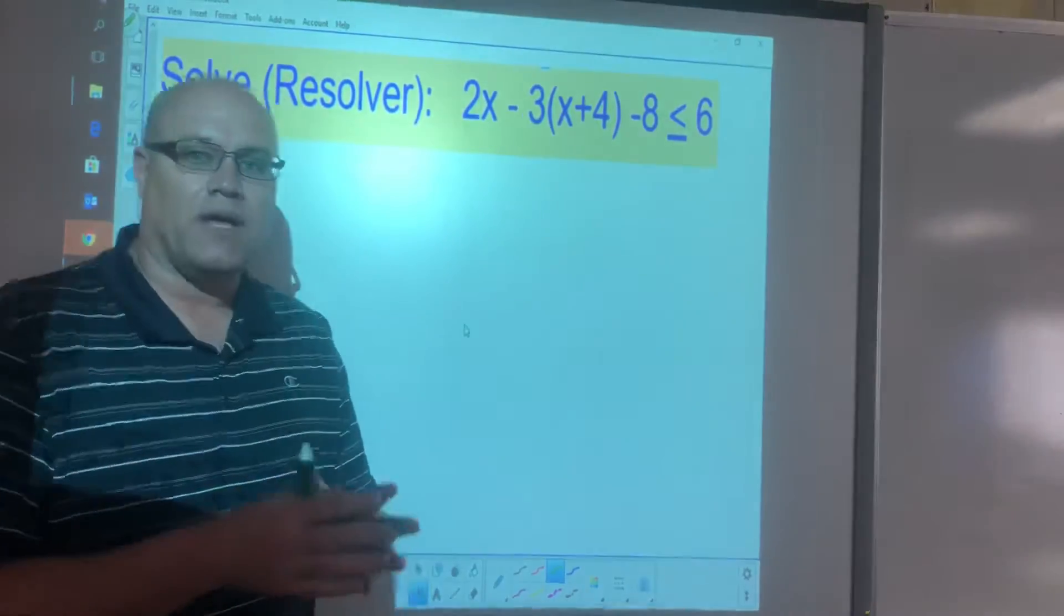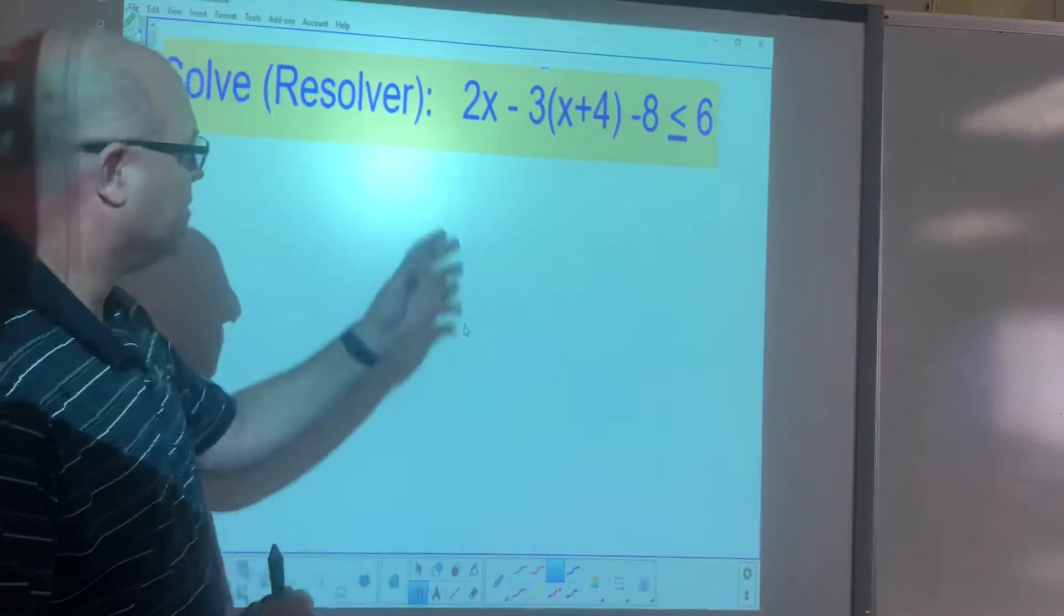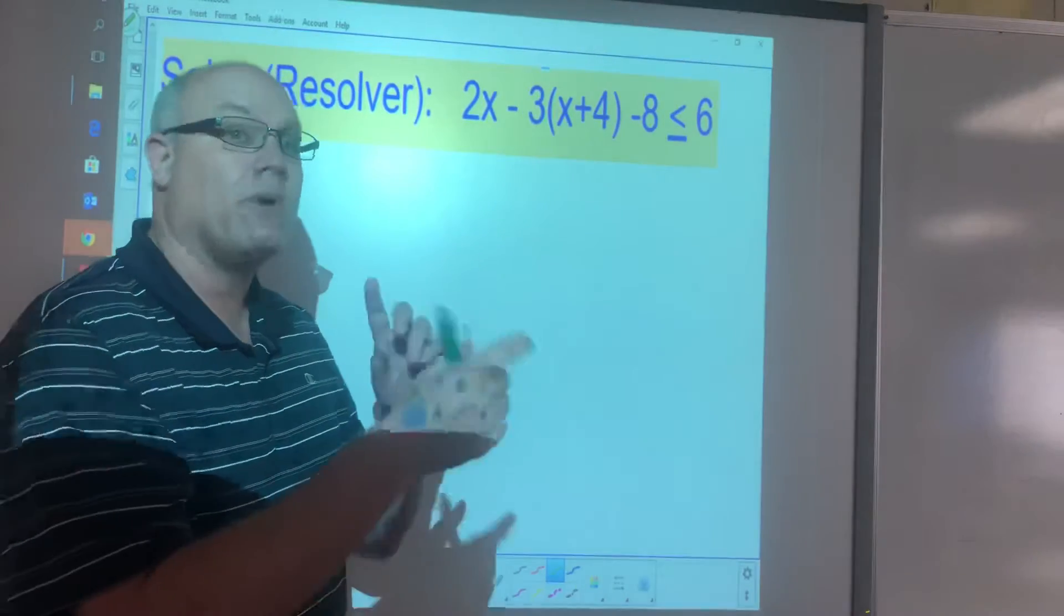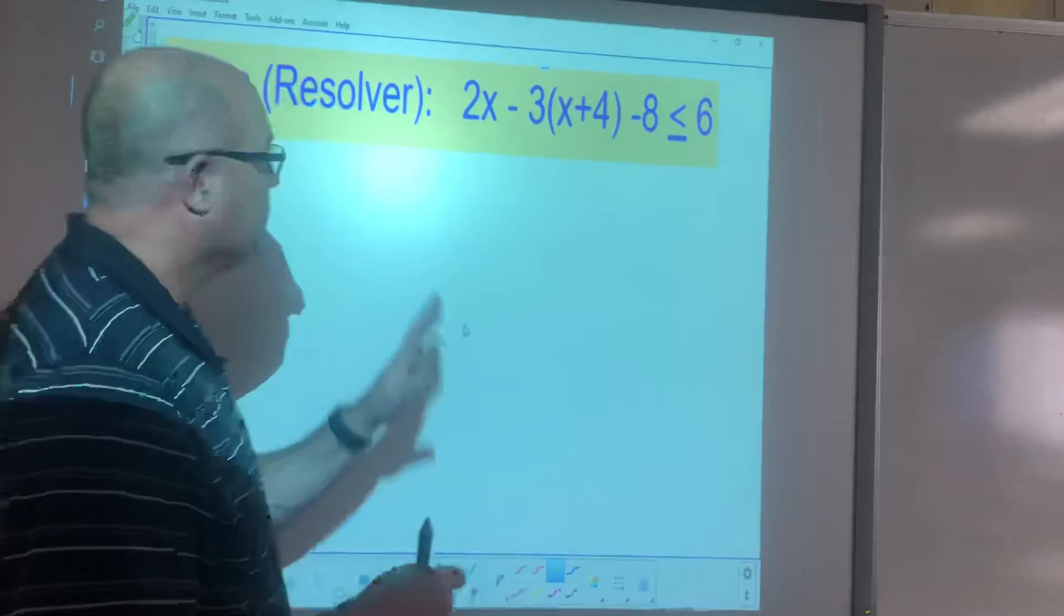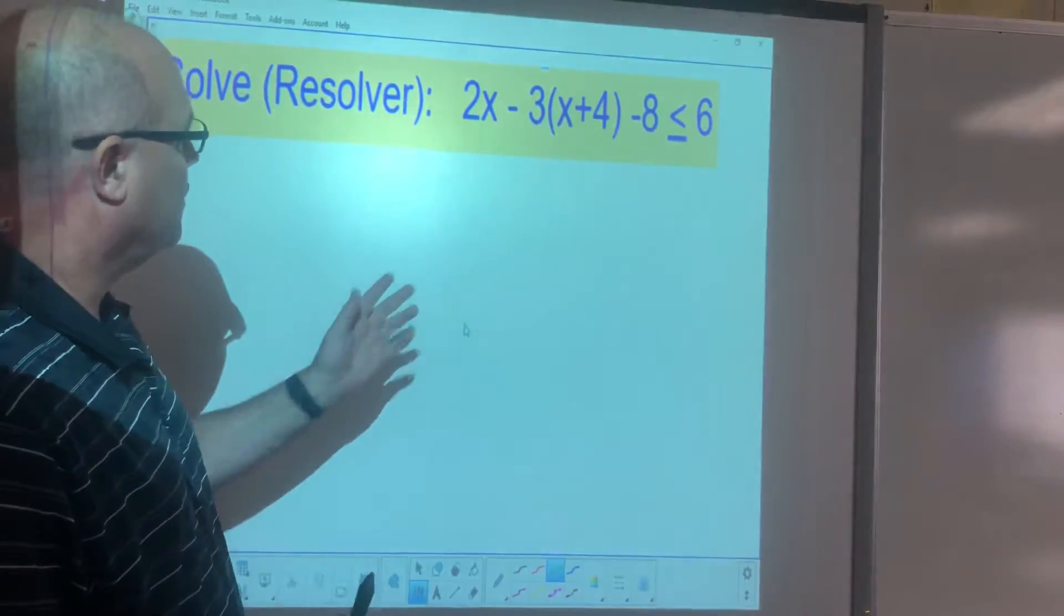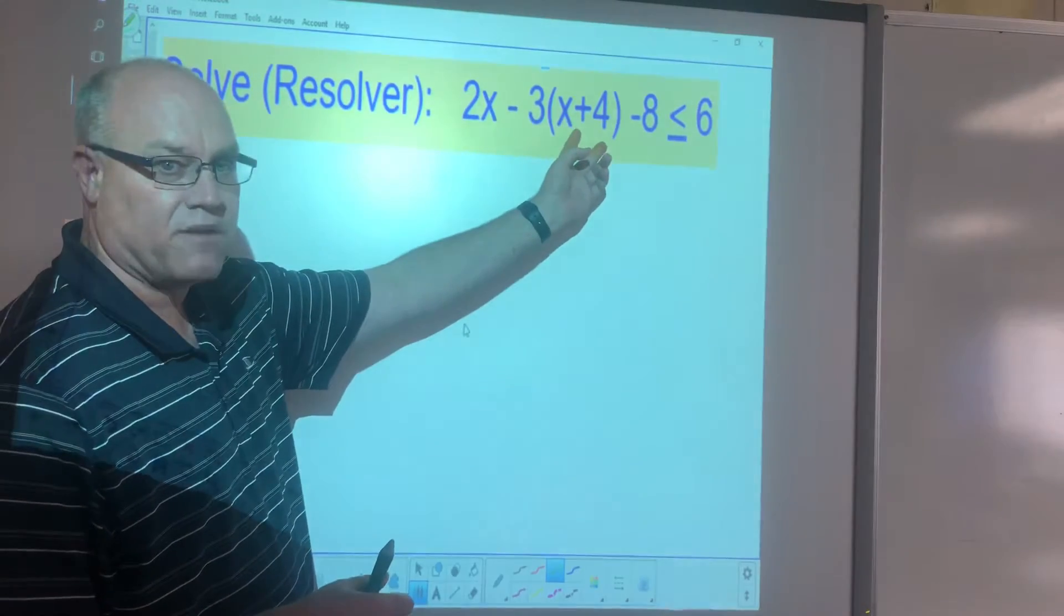It's just like solving an algebraic equation with one exception, and that is if we multiply or divide both sides of the inequality by a negative number, then we will flip the sign. So let's treat this just like an equation. What would you do first? That's right, we want to use distributive property to remove the parentheses here.